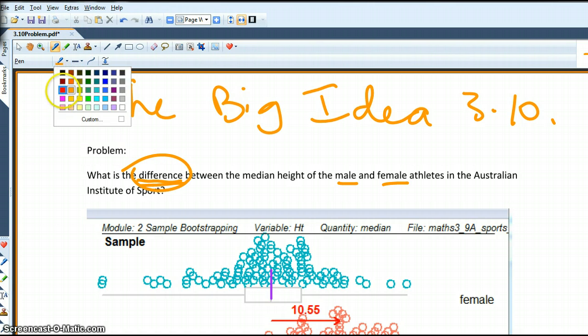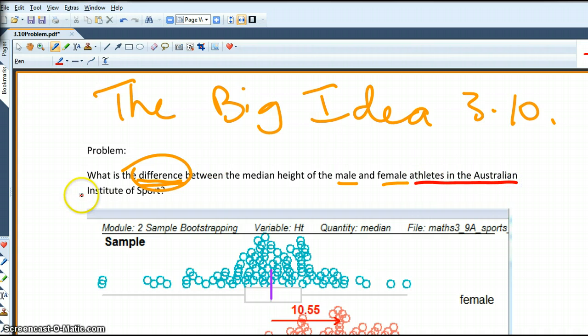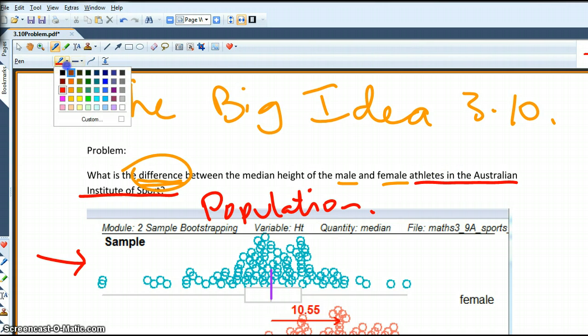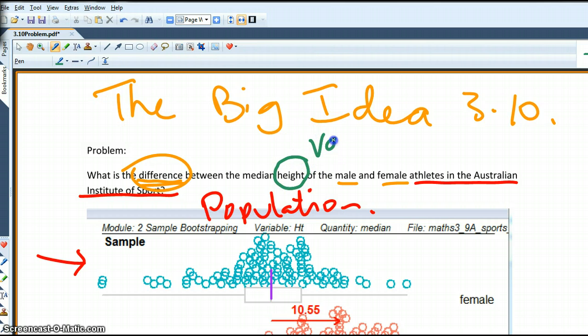In your question you must have the population. So athletes in the Australian Institute of Sport, that is your population. It's important to notice that this data here is sample data. It is not the entire population data, but we're actually answering a question to do with the population. We have a variable that we're comparing, so that variable here is height. And that's a measurement variable or a continuous variable, whereas that's a categorical split.